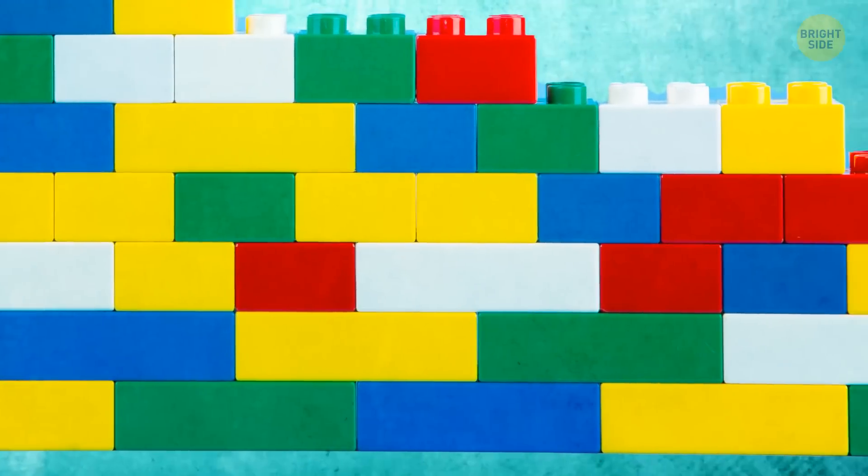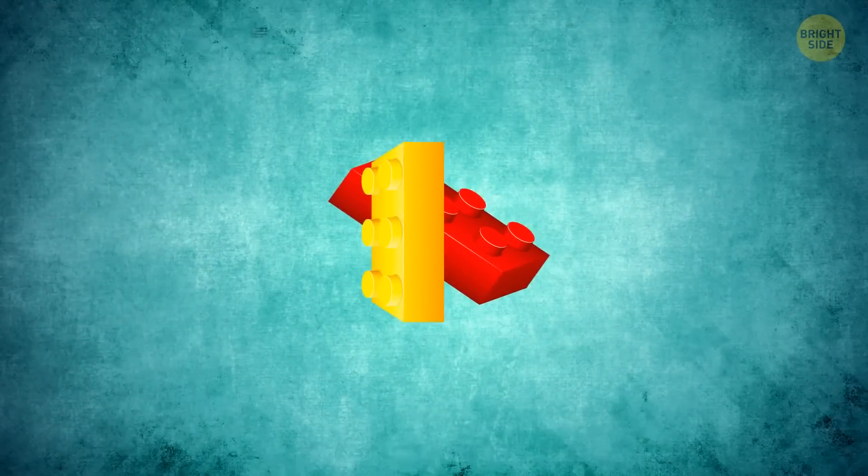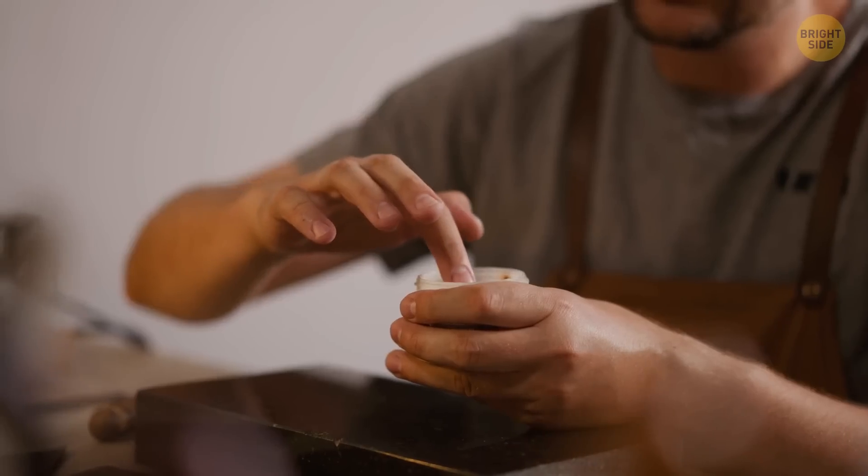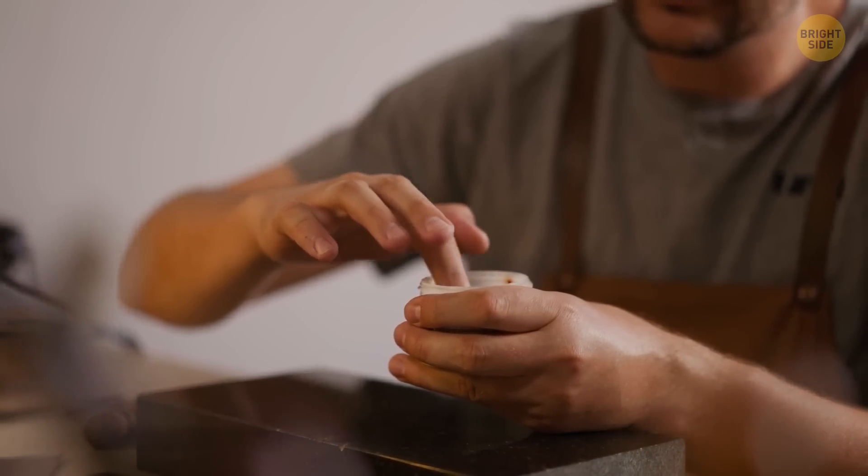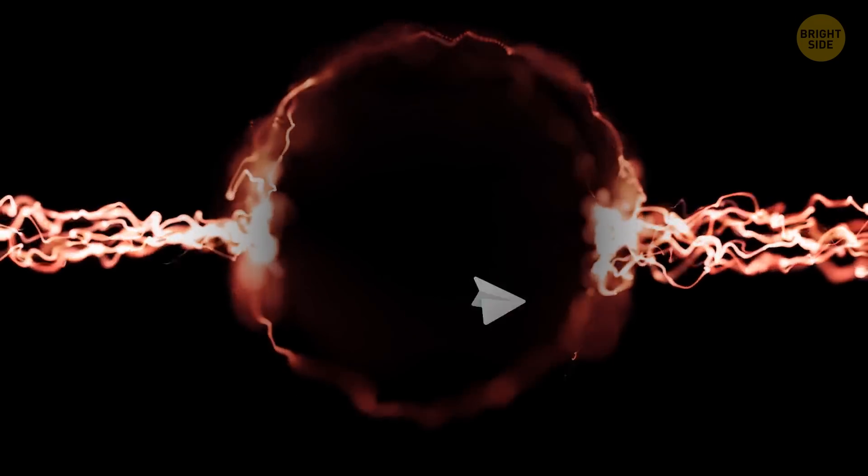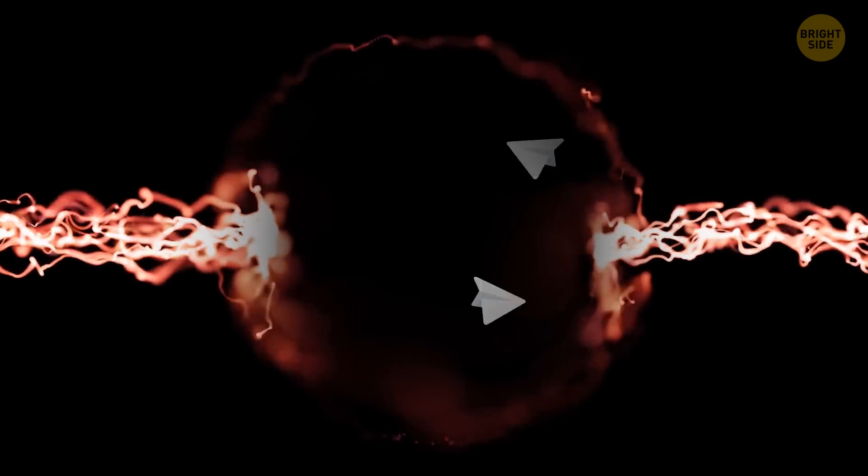We have up quarks, down quarks, strange quarks, charm quarks, top quarks, and bottom quarks. All of them are held together by some special forces, the gluons. They're like the super glue that keeps the quarks stuck together. They carry a special force called the strong nuclear force. They're also kind of like the messengers, passing messages between the quarks and keeping them connected.